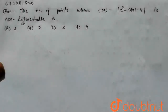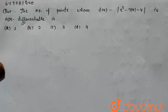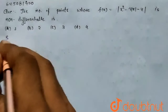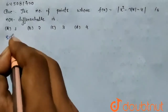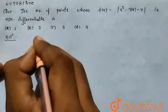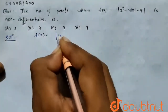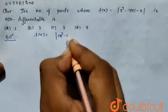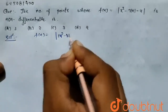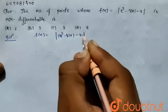Hello everyone. In this question, the number of points where f(x) = |x² - 3|x| - 4| is non-differentiable. So in the solution part, the given function is f(x) = ||x|² - 3|x| - 4|.